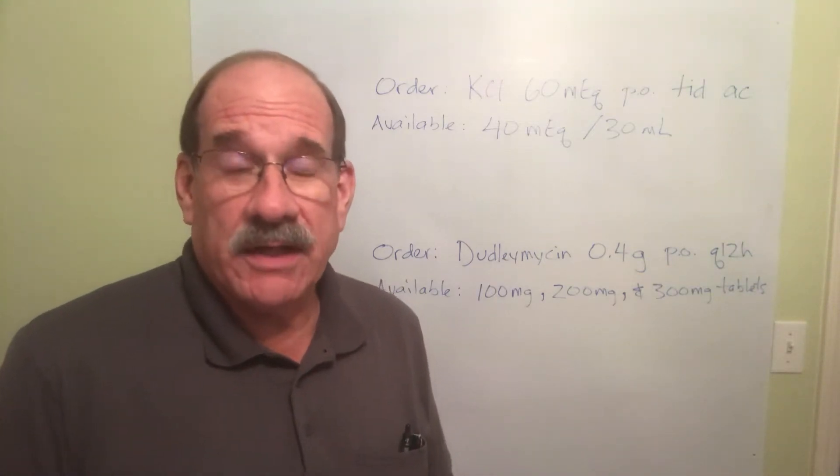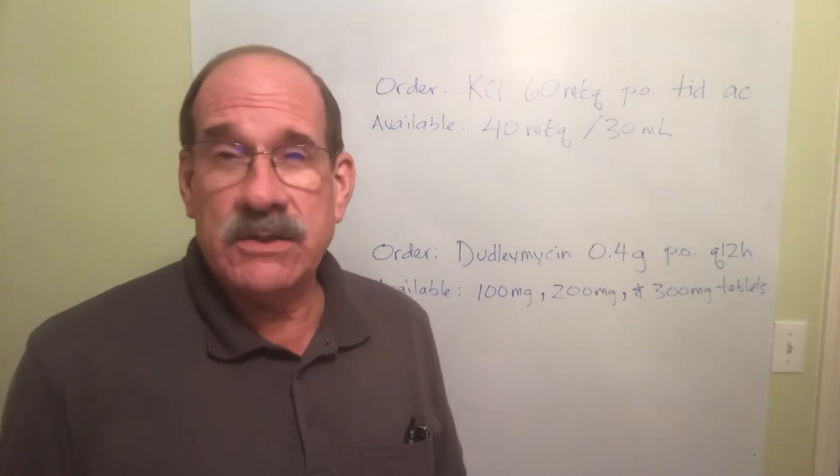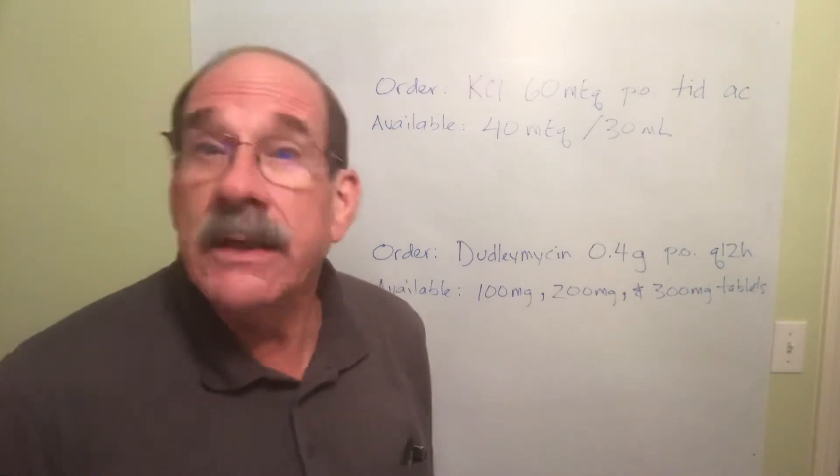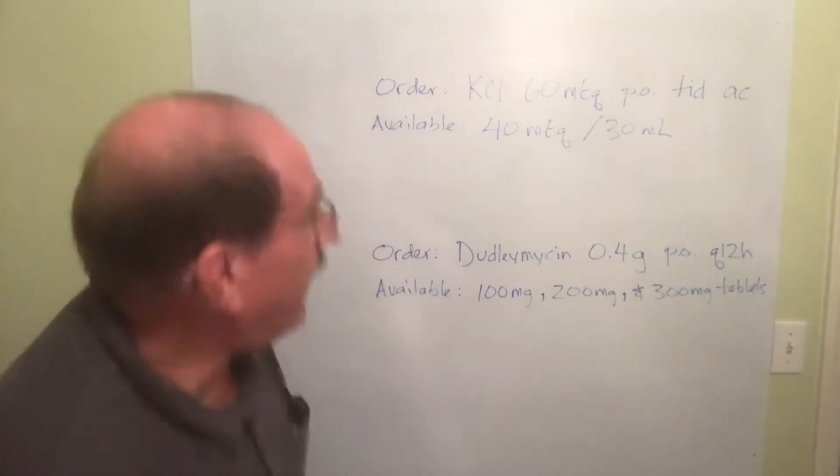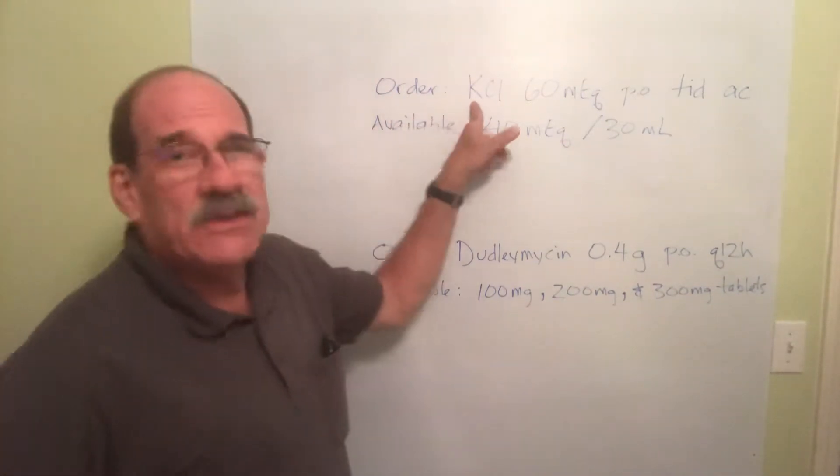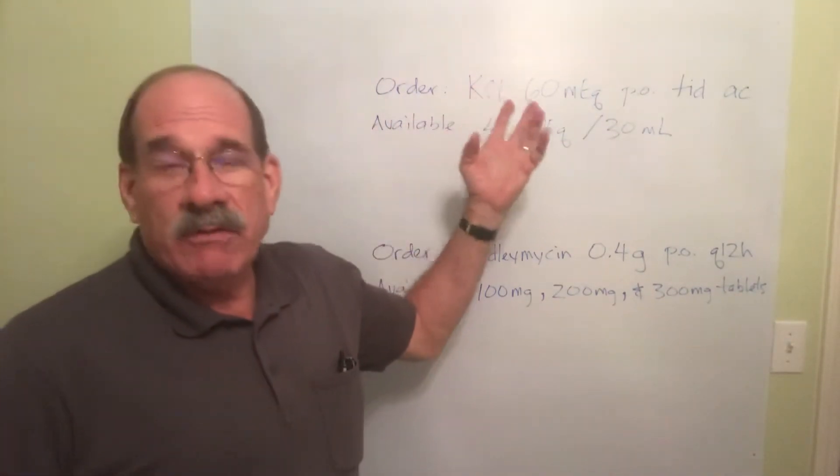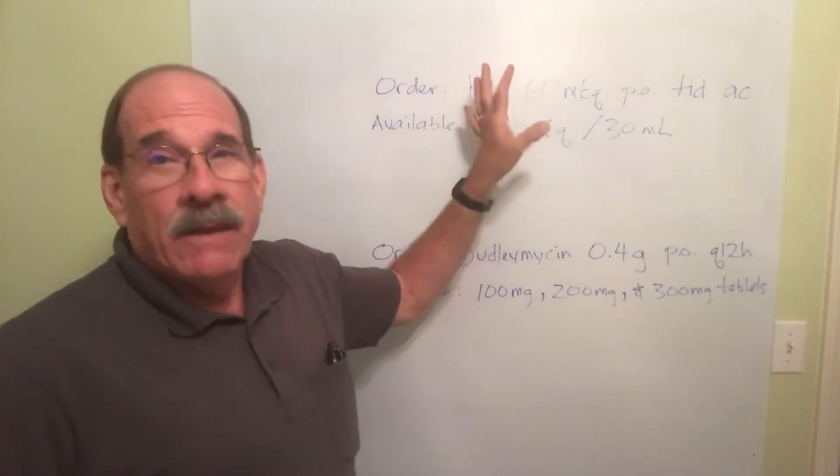Let's keep going on dosage calculations, looking at different variations of things you're going to see. We have an order now for KCl, that's the chemical symbol for potassium chloride. I couldn't put the whole potassium chloride word, I'd run out of space. I wouldn't want to write on my wall over here.